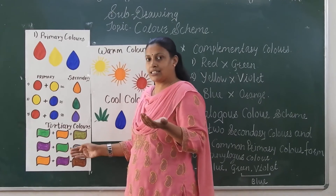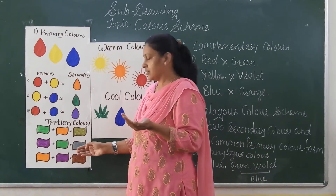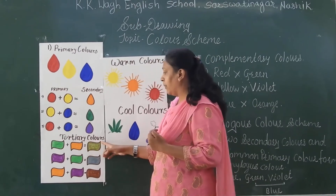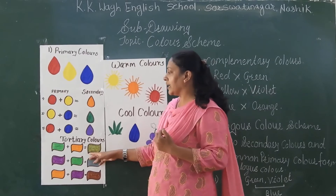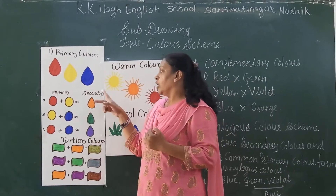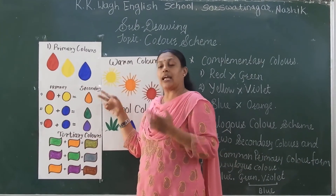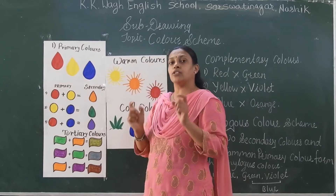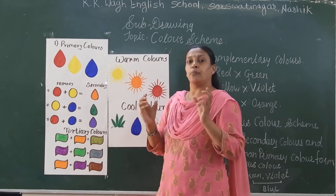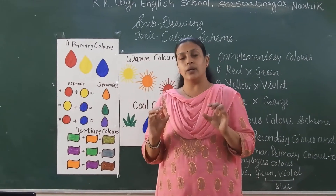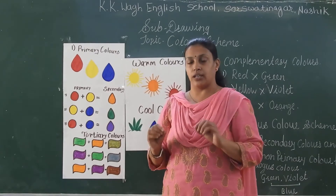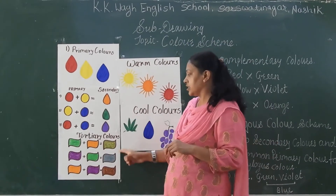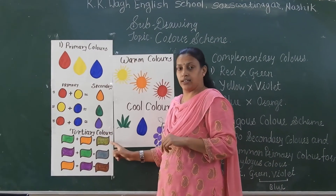Next are tertiary colors — the third color scheme. For tertiary colors, we mix one primary color and one secondary color together in equal proportion, and we get the third shade, which is the tertiary color.